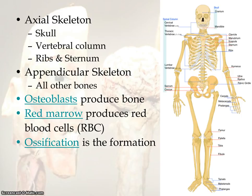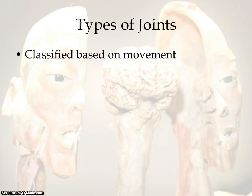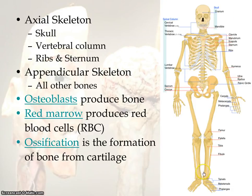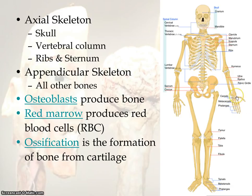Ossification is the process when bone forms from cartilage. Sometimes cartilage is produced first and then it ossificates or changes into bone. As far as the 206 bones go, you definitely want to be familiar with the main ones. There are a lot of different types of bones found within just the hand or just the feet — especially within the palm area — but we'll focus on the main ones.